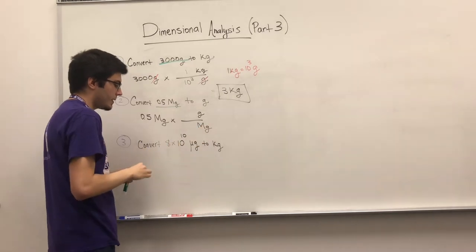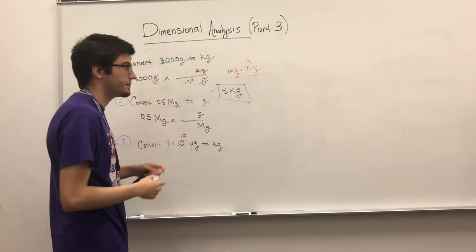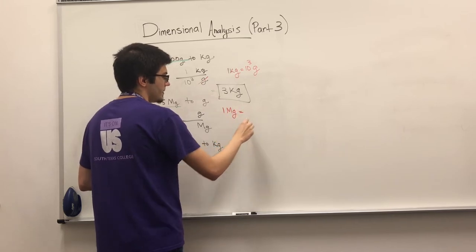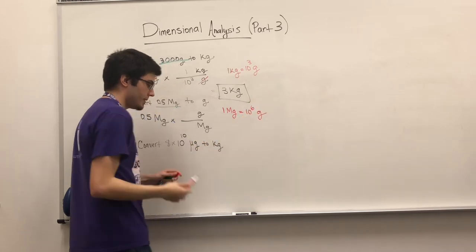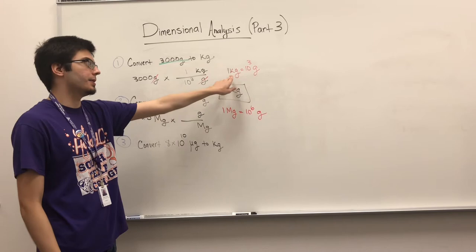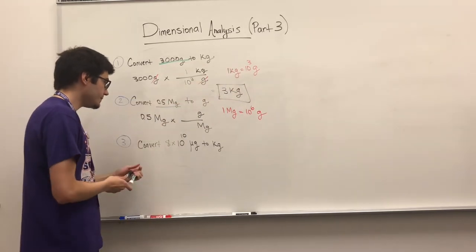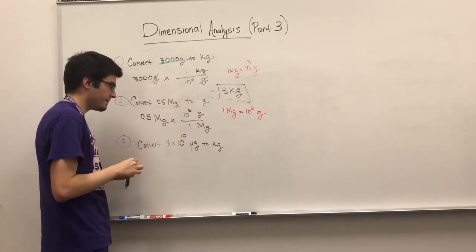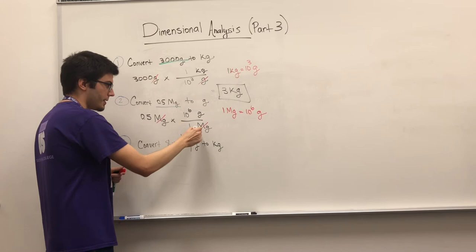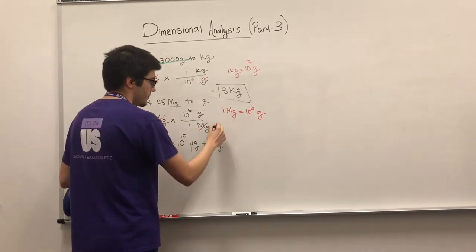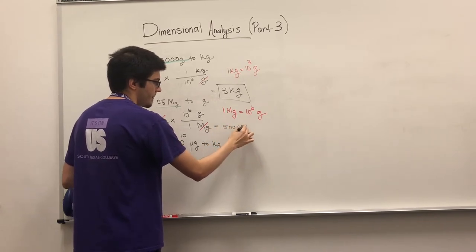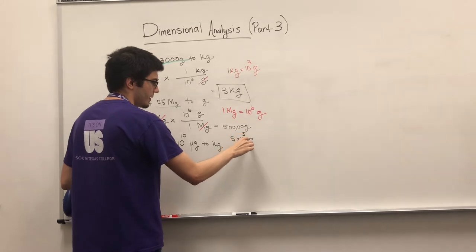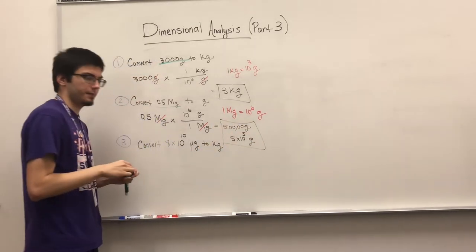We're talking mega — something big — so we need to remember the conversion factor. One megagram is 10 to the 6 grams, because mega is 10 to the 6, just like kilo was 10 to the 3. We write that in, the megagram units cancel out, and we get 500,000 grams, or 5 times 10 to the 6 grams — those are equivalent, written in scientific notation.